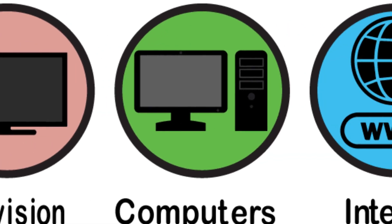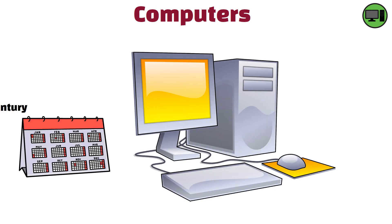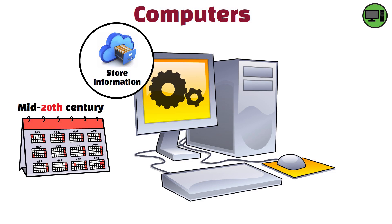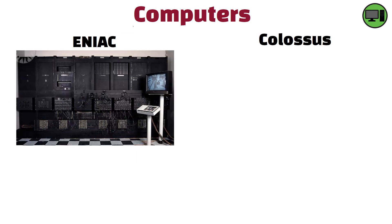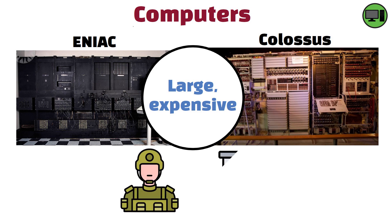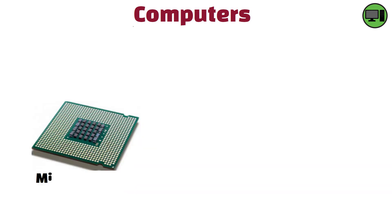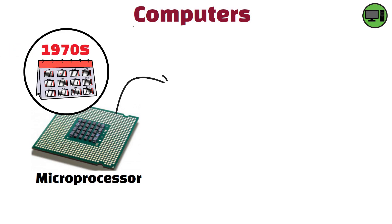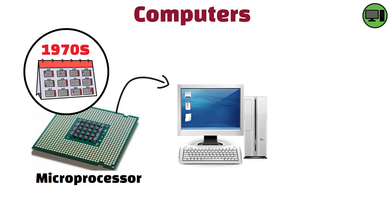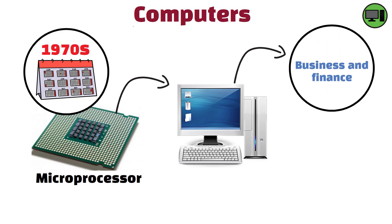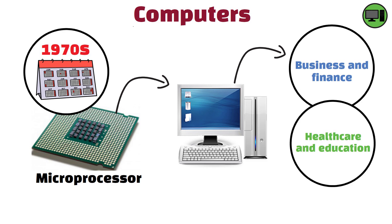Computers. The development of computers in the mid-20th century transformed the way we process and store information. Early computers, such as the ENIAC and the Colossus, were large, expensive, and primarily used for military and scientific purposes. The invention of the microprocessor in the 1970s led to the development of personal computers, making computing power accessible to the general public. Computers have revolutionized industries, from business and finance to healthcare and education.